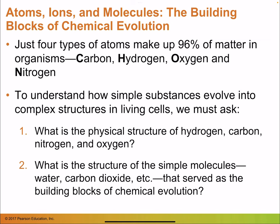Those four chemicals — carbon, hydrogen, oxygen, and nitrogen — make up 96% of our living body. We're going to look at the basic physical structure of these four chemicals and see how they can be put together to make up 96% of our body.